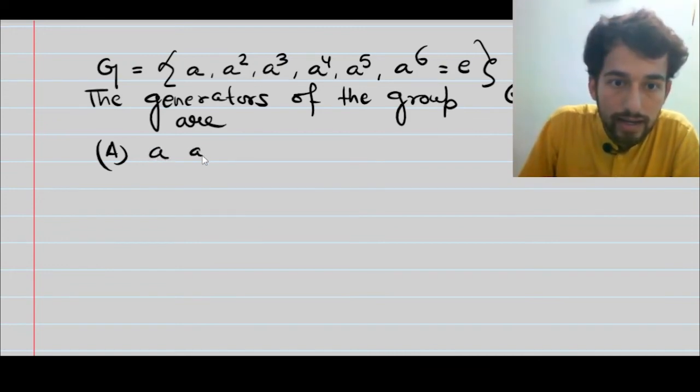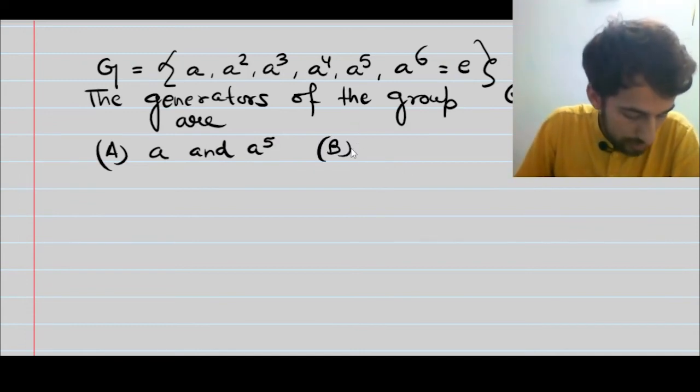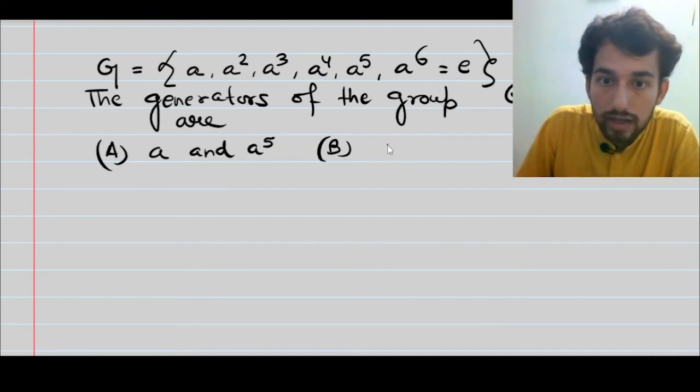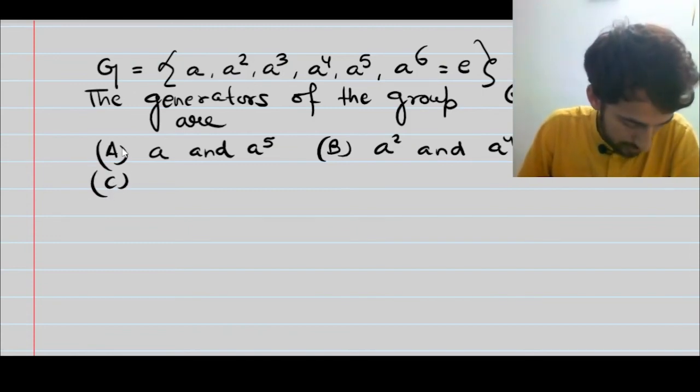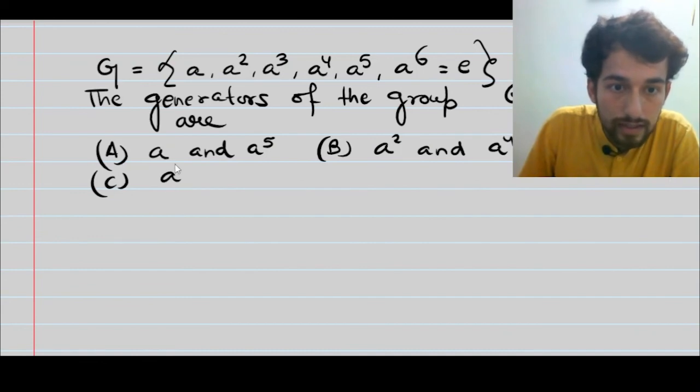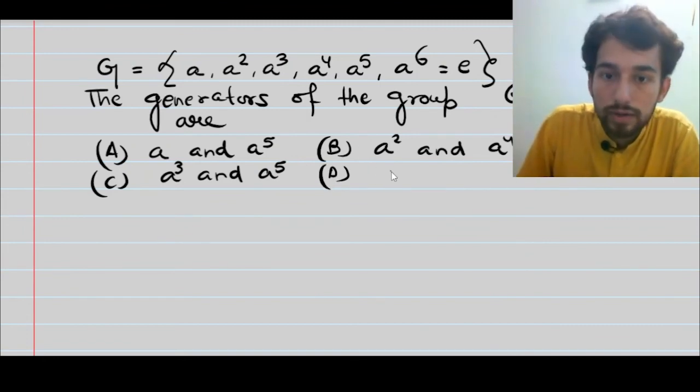Option A: a and a raised to the power 5. Option B is a square and a to the power 4. Option C is a to the power 3 and a to the power 5. And the last option is a to the power 2 and a to the power 3.